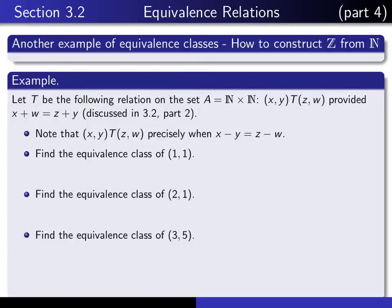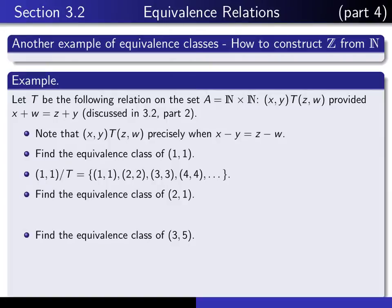Use that fact to figure out what the equivalence class of each of these things is. The equivalence class of (1, 1) means the set of all things that are T-related to (1, 1). Something is related to something else precisely when the differences are the same. The difference here is 0, so the equivalence class of (1, 1) is the set of pairs of natural numbers where both components are the same. For (2, 1), the difference is 2 minus 1, which is 1, so it's the set of all pairs of natural numbers where the difference is 1.